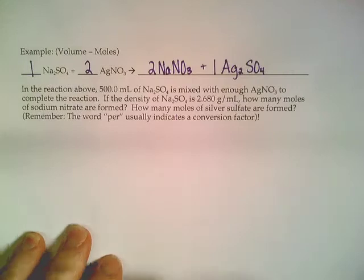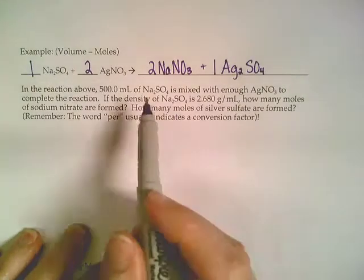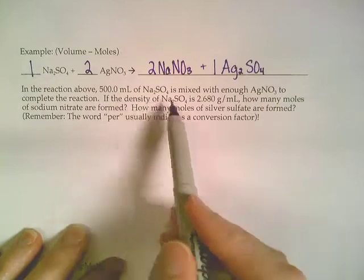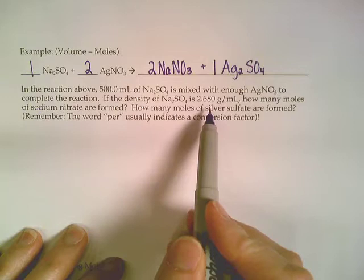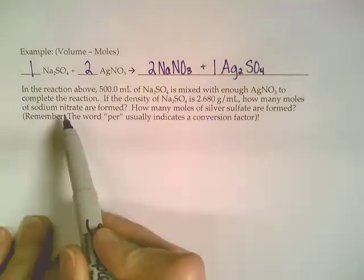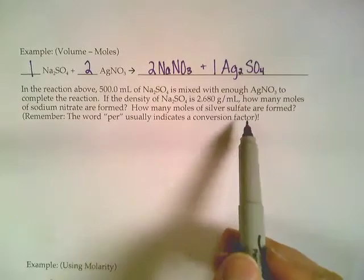Now that we have that part down, we're going to look at the numbers that we were given in this problem. We've got 500 milliliters of sodium sulfate. Then they also gave us the density of that sodium sulfate, and we want to get to moles of sodium nitrate and moles of silver sulfate. So this is a two-part problem.